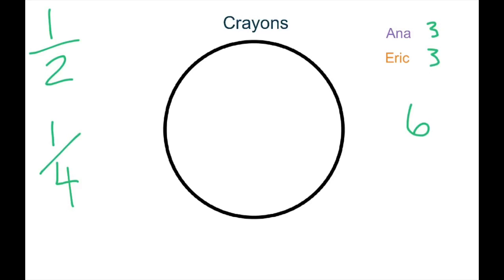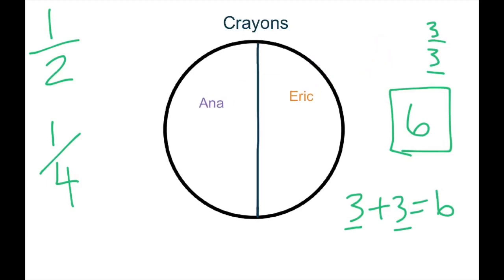So, what do you see here when you see six, and each has three? Well, you know that three plus three equals six, right? So, three and three is half of six. So, I can split my circle graph in half, and it would show that Anna has half of the crayons, and Eric has the other half.